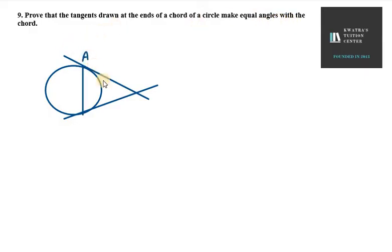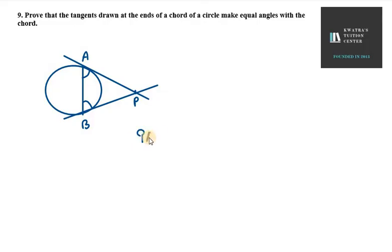So, we have a chord AB. We have to prove that angle PAB and angle PBA are equal. This is the most simple question in this exercise, because we know our external point is P. We go to P and our tangents meet. This means PA is equal to PB. The reason is: tangents drawn from an external point P to a circle are equal.